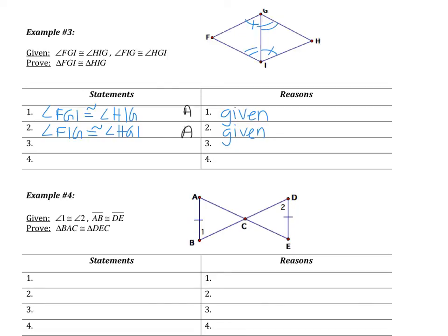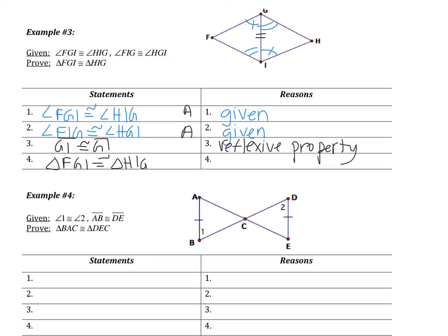Next, I know that angle FIG is congruent to angle HGI — that's also a given. I'll use two tick marks to differentiate. This gives me a second pair of angles. Is there anything else true in the figure? GI is congruent to itself by the reflexive property — any item is congruent to itself. Now triangle FGI is congruent to triangle HIG. The sides I have are the included sides connecting my two angles, so this is ASA.